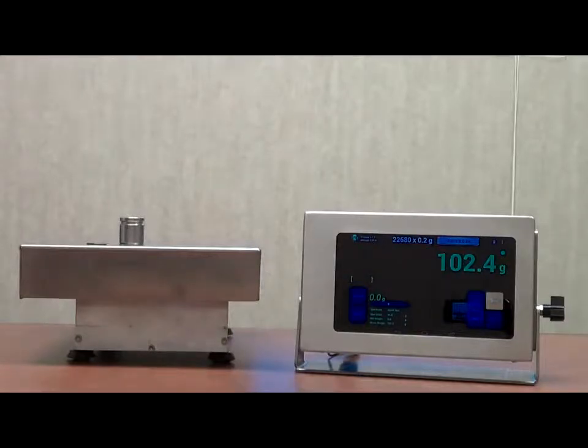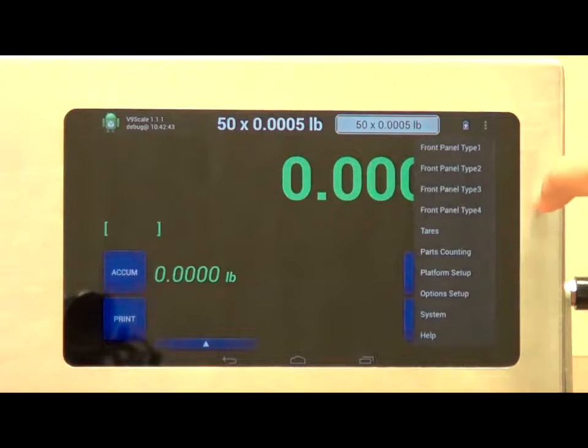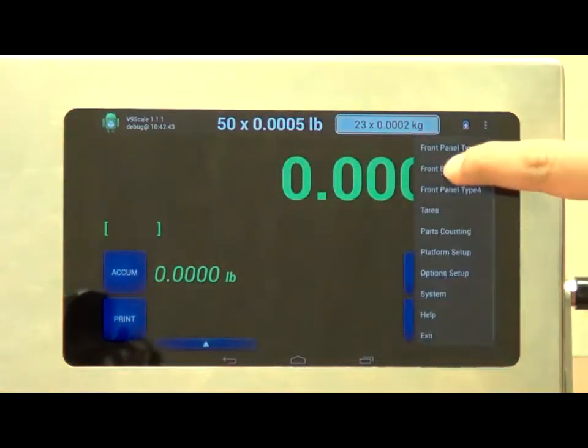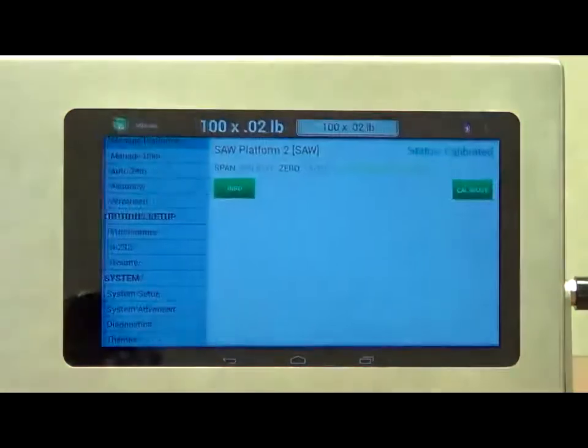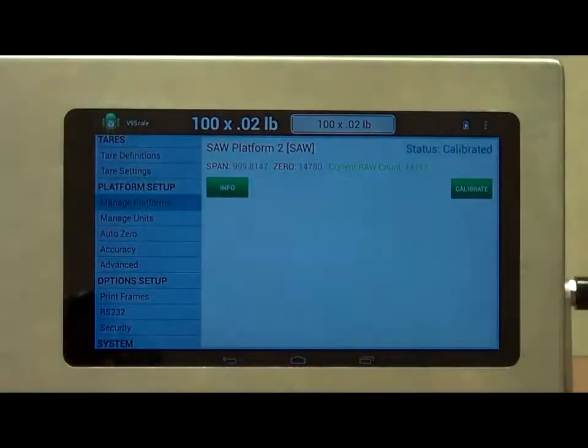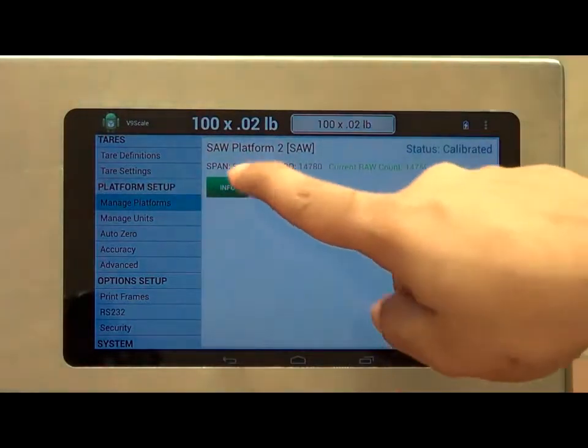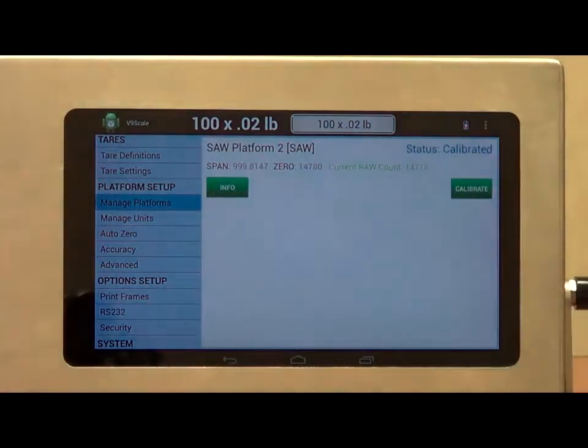We'll have someone else here demonstrate some of the functions. Let's look at the settings on the scale. I can easily access that by pressing the top right button on the screen. We are going to look at the platform setup. In this screen, we can look at the status of the current platform. We see the calibrated span, the calibrated zero, and the current row count. We know the scale is working fine if you see this row count moving.